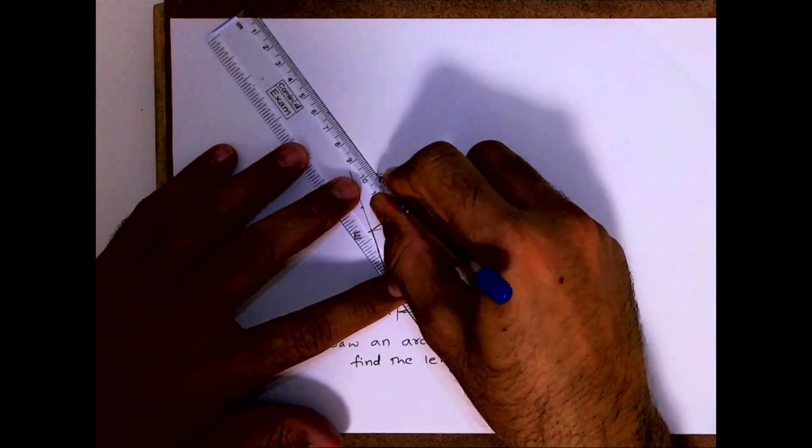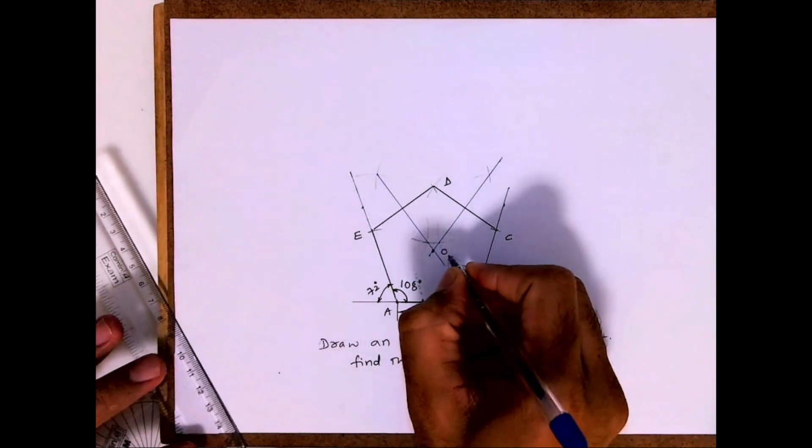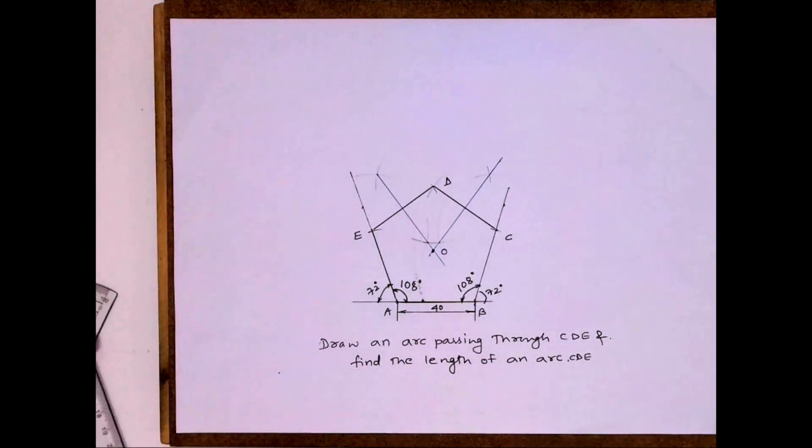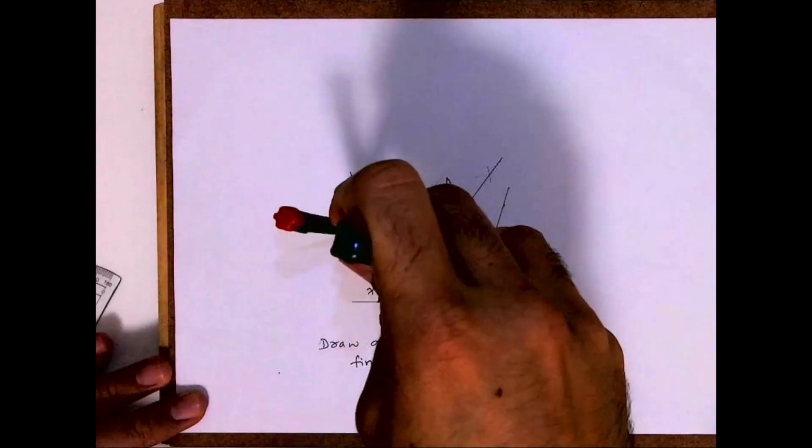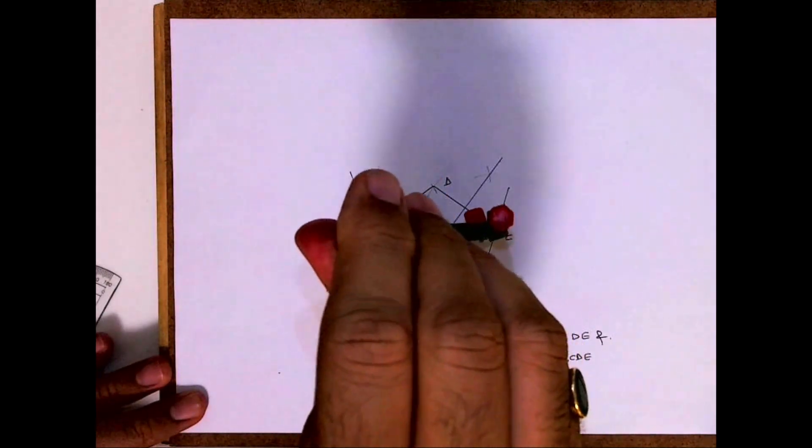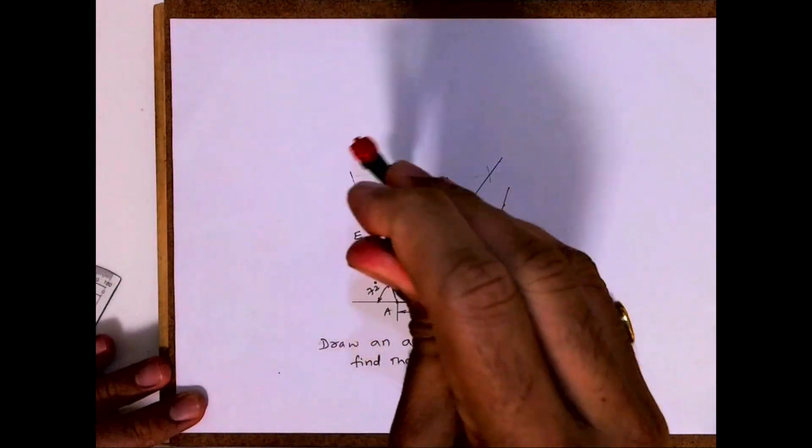Then here also you bisect. Wherever it will cut, that will be point O, and from O take radius D or E or C, whatever you want, and you can draw a curve passing through C, D, and E.